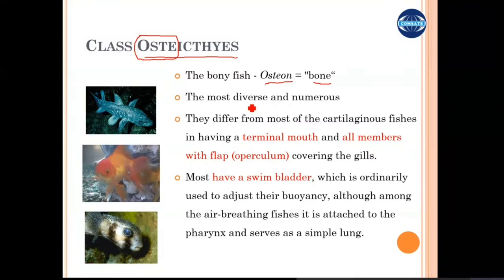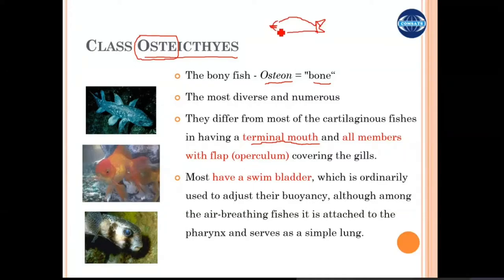The main differences in this type of fish from the earlier group, class Chondrichthyes — the cartilaginous fish — is that their mouth is not ventral. Instead it is terminal, so they have the mouth at the front end of their body. Their gills are always covered with a flap-like structure called the operculum.